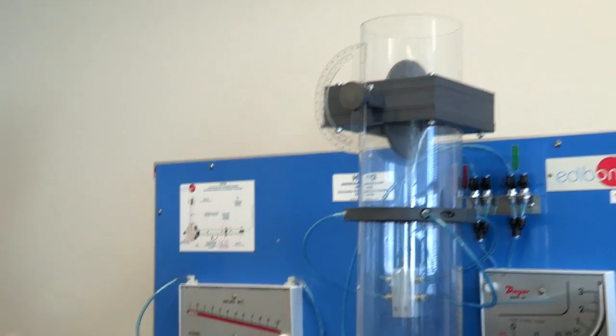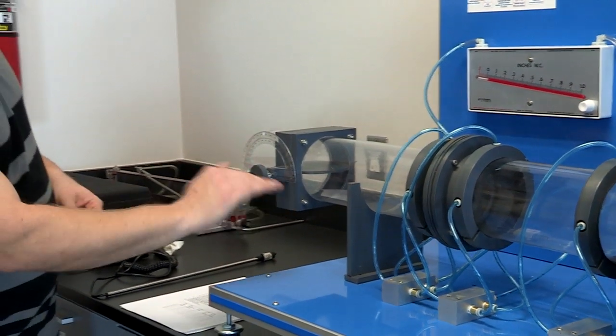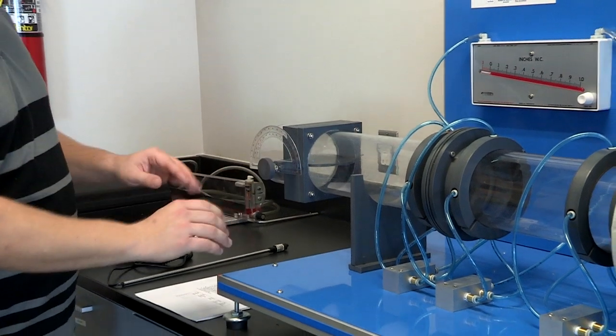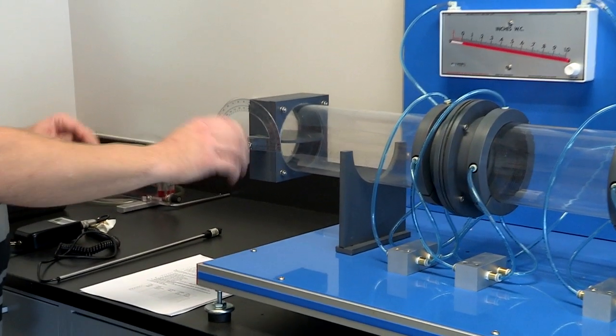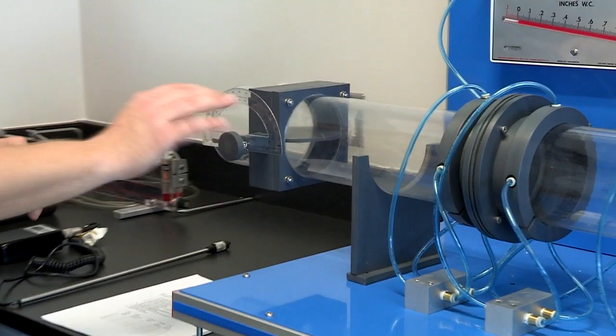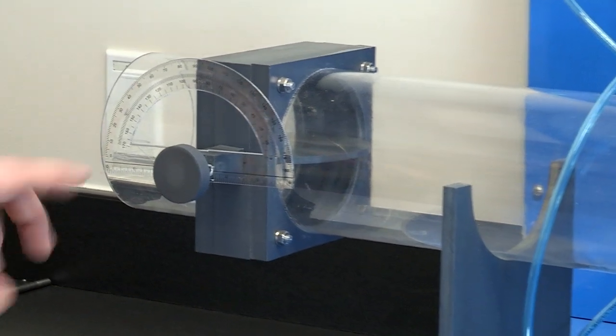For the outlet, we're going to make sure that this one is at 90 degrees also, perfectly horizontal. You want to make it as close to straight as you can because the little bit of air resistance that you cause by the damper being out is going to change your results.